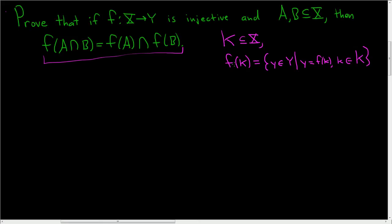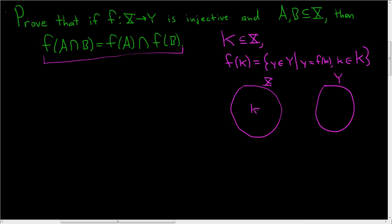So it's the set of all of the images of K under F. If this is X and this is Y, and this is K, then F takes K to another set, which we'll call F of K — all of the elements that get mapped to Y that come from capital K. Anyways, let's go ahead and prove this. Proof.